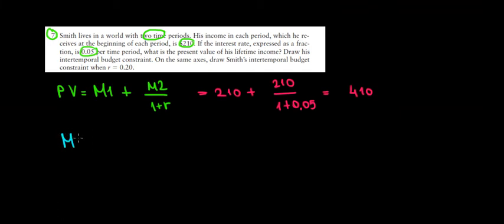In the second period, we would have the money in the second period, plus the money from the first period compounded with interest, because we would put it in the bank to accumulate interest.